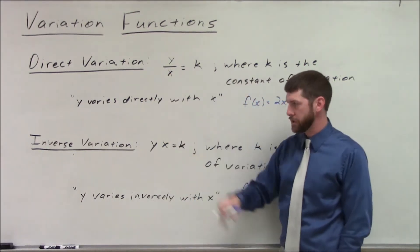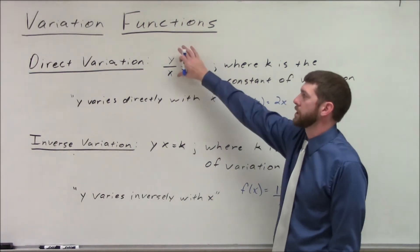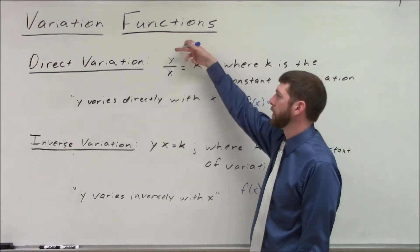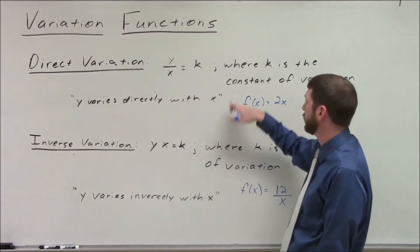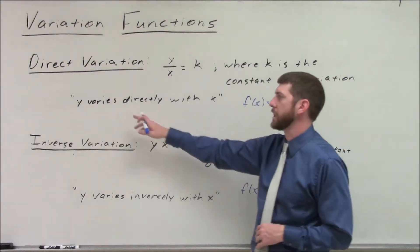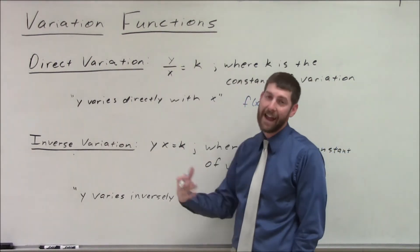We have direct variation and inverse variation. Now, direct variation sets up this ratio where the variables will vary directly. And what that means is as one increases, the other one has to increase so we can keep them equal to this constant value. So k is just our constant of variation. We say y varies directly with x or y varies directly as x.